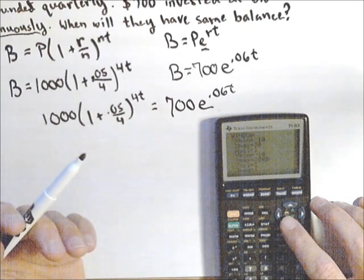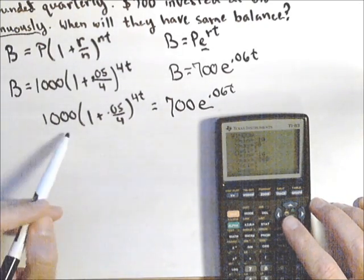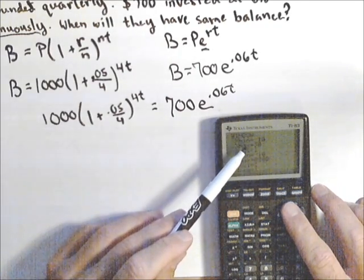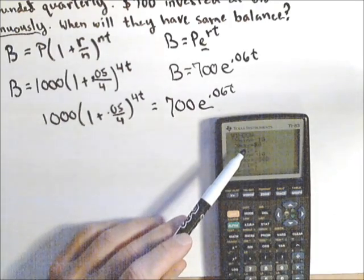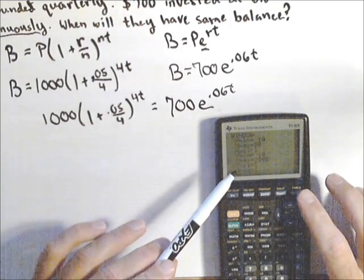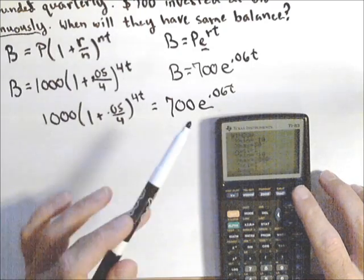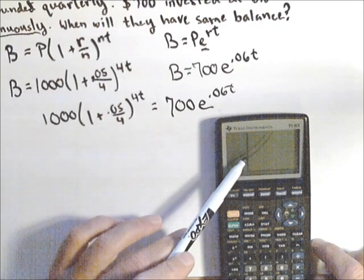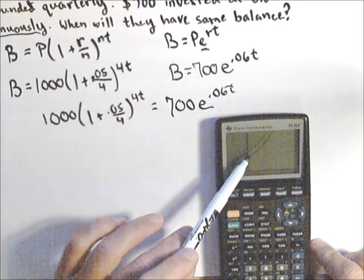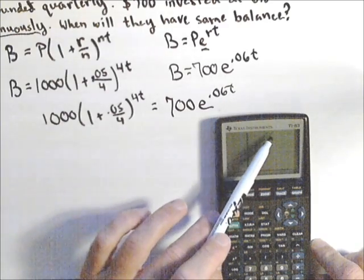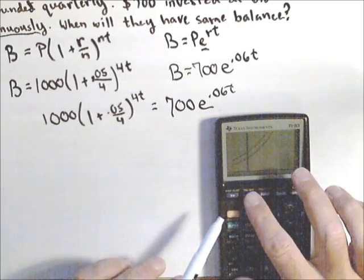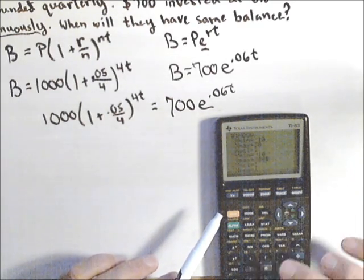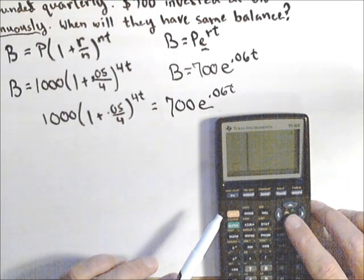I want to pick a window that makes sense. Clearly I'm going to have to be a lot taller than 1,000, so I'm going to move my Y max up to 2,000. My X max, I don't know, maybe I think it takes 30 years for the account that started with less to catch up. The negatives we don't need, but they're not going to hurt. So I'm going to graph, and notice what I see—both of them growing about the same rate. I see it cut off here, so I definitely need to go taller. They definitely meet at more than 2,000, so I'm going to try 3,000 for my Y max.